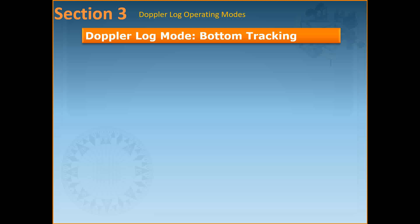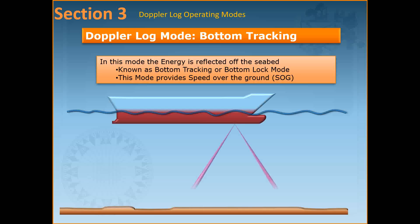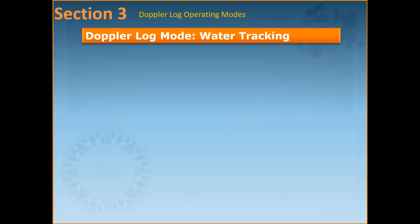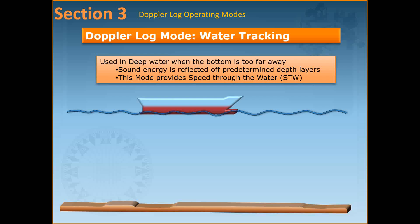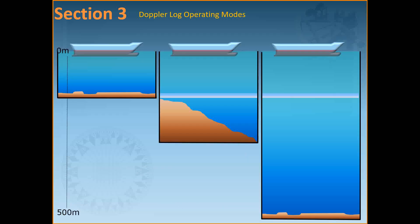The Doppler log has two operating modes: bottom track and water track, which provide speed over the ground and speed through the water respectively. In bottom track, in shallow water, the energy is reflected off the sea bed and the speed measured is speed over the ground — also called bottom lock. In water track, in deep water where the bottom is too far away, electronic circuits enable sound energy reflected from a determined water layer to measure speed through the water. If speed in bottom track differs from speed in water track, a current exists.